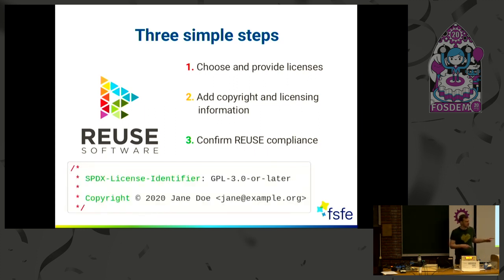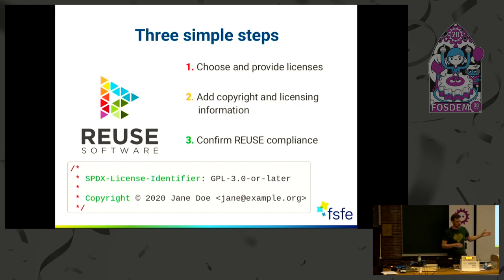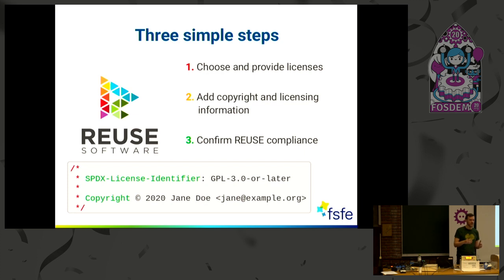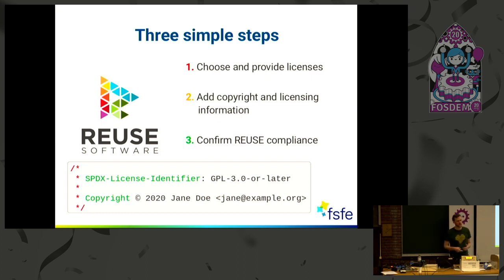Here is an example of what this looks like. This is a comment header you store in the file — it has basically two lines: the SPDX license identifier, which is a unique identifier for the license you've chosen, and a copyright statement identifying who the copyright holder of the file is. That's the most important information you need to provide when you release free software.